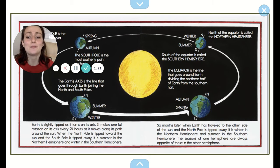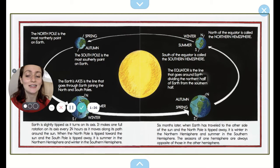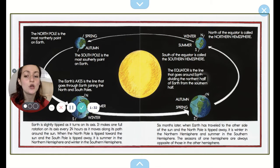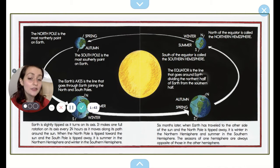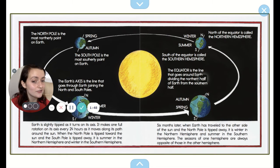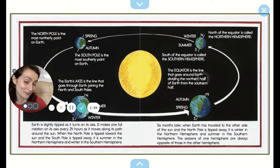Earth is slightly tipped as it turns on its axis. It makes one full rotation on its axis every 24 hours as it moves along its path around the sun. When the north pole is tipped toward the sun and the south pole is tipped away, it is summer in the northern hemisphere — that's where we are — and winter in the southern hemisphere. Six months later, when earth has traveled to the other side of the sun and the north pole is tipped away, it is winter in the northern hemisphere and summer in the southern hemisphere. The seasons of one hemisphere are always the opposite of those in the other hemisphere.